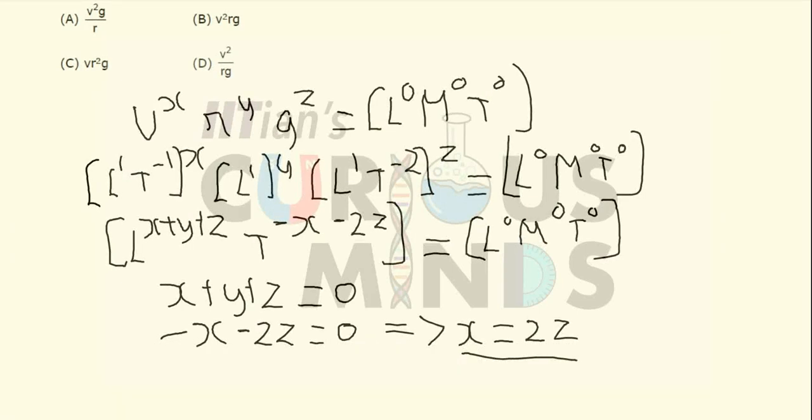We have to make sure that the value is dimensionless. That is the first option is obeyed. And even the second option that is X is equal to 2Z. So now, if I consider the option number D, that is X over here is equal to 2,